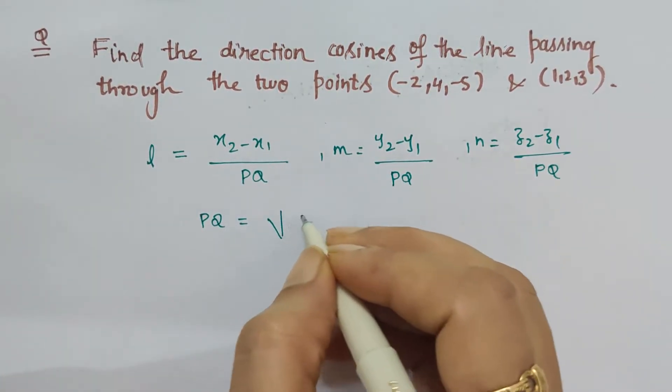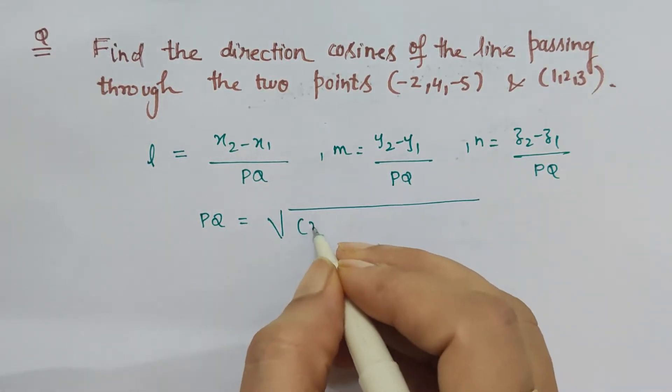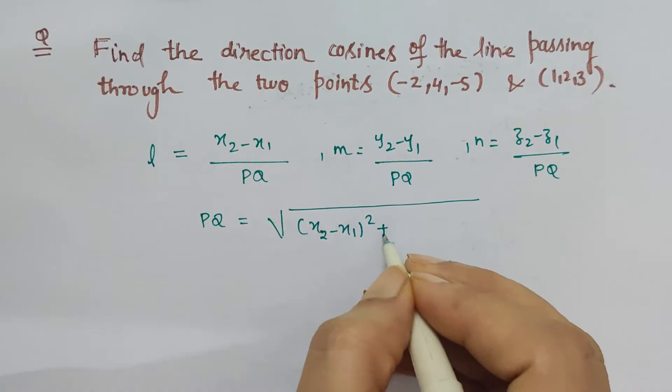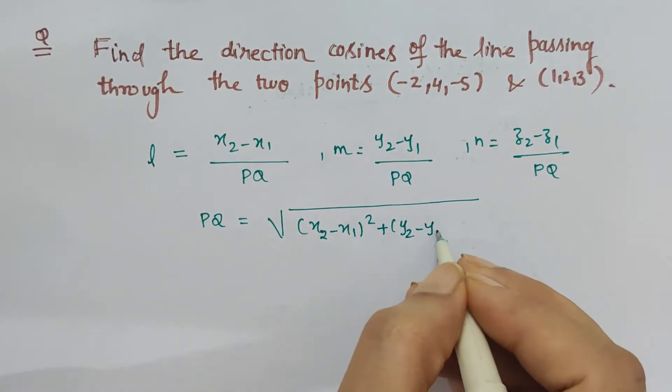Where pq is nothing but square root of x2 minus x1 whole square plus y2 minus y1 whole square plus z2 minus z1 whole square.